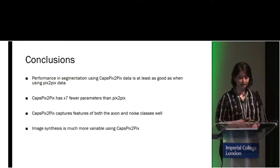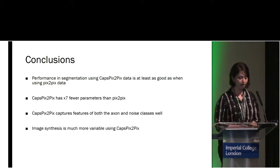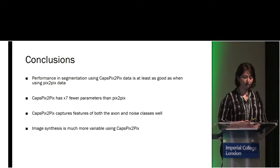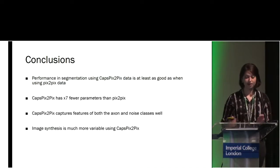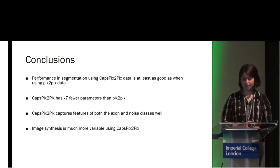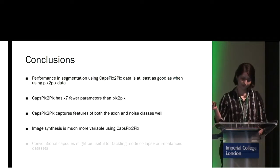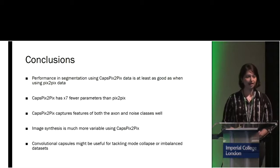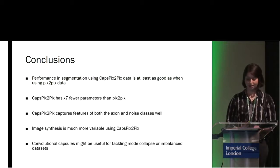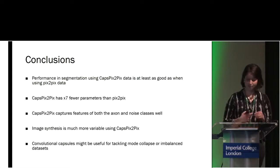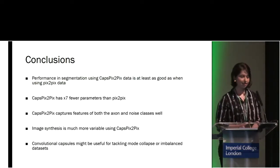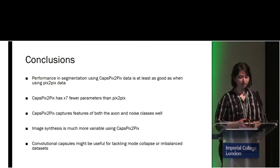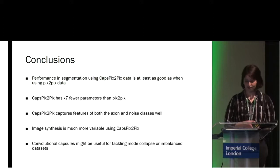In addition, we find that image synthesis is a lot more variable, which is very important when we want to synthesize an infinite number of images from similar labels. Finally, following our experiments, convolutional capsules may be very useful for tackling imbalanced datasets, datasets with lots of classes, or even the problem of mode collapse in GANs, as we have illustrated.